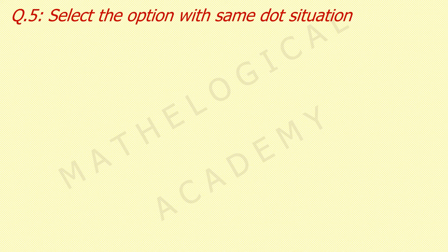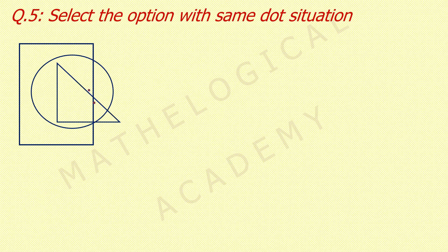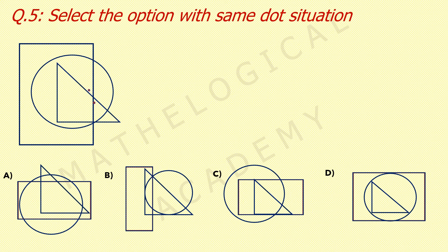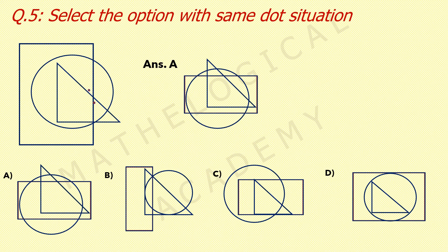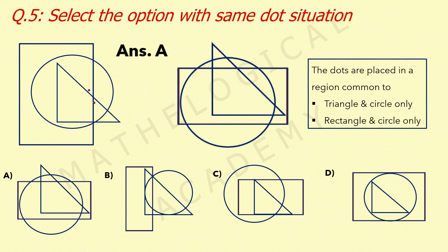Question 5: select the option with the same dot situation. The answer is option A. Here dots are placed in a region common to triangle and circle only, and rectangle and circle only. In option A, we have the region common to triangle and circle only.